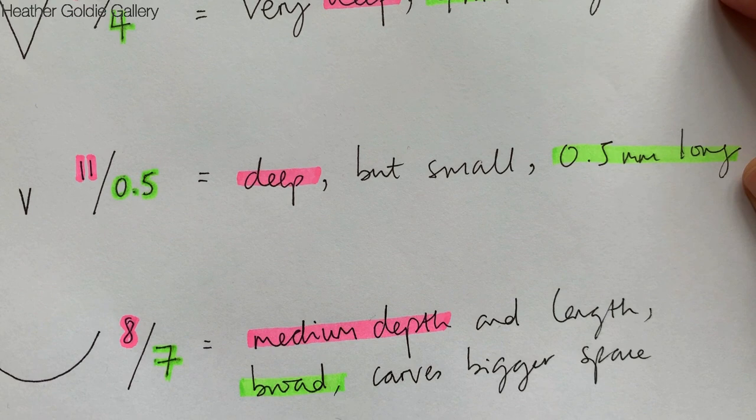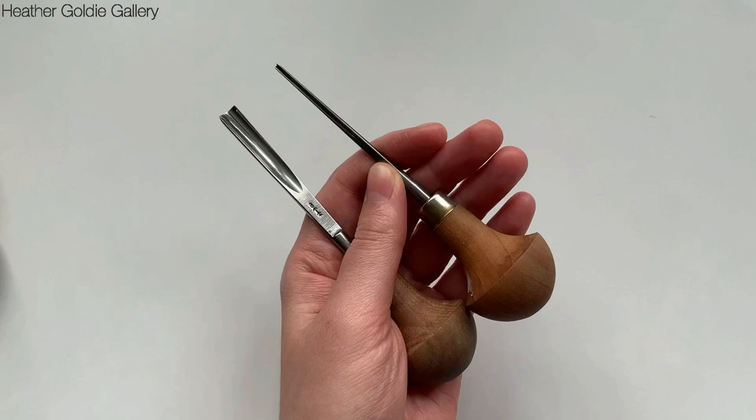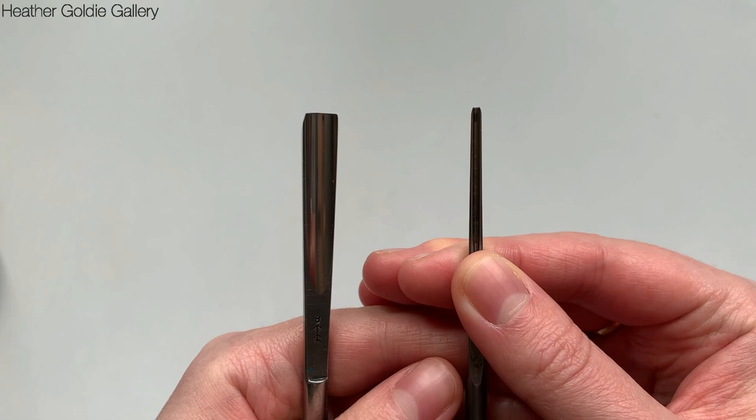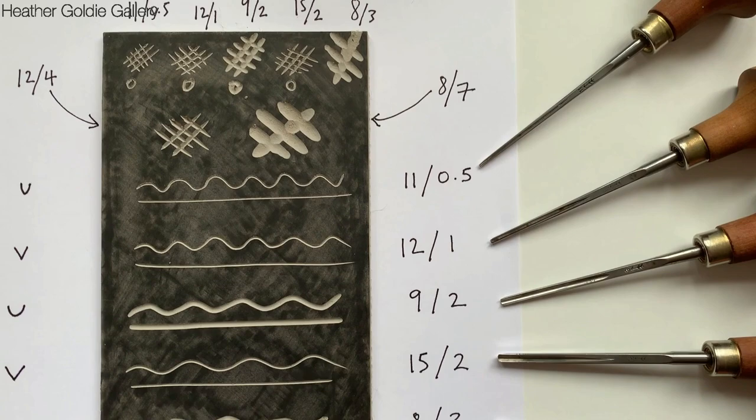The higher the first number, the deeper the curvature, creating deeper grooves and sharper lines in the lino. The smaller the second number, the more precise and smaller the tool is. You can see a clear example here of the different tool sizes.